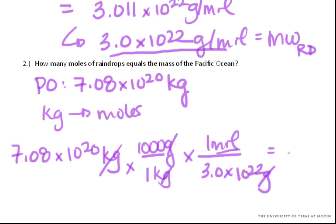So now we're in moles, which is what we want. And you find that we have 23.6 moles of raindrops is equal to the Pacific Ocean.